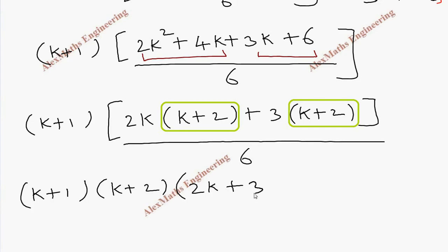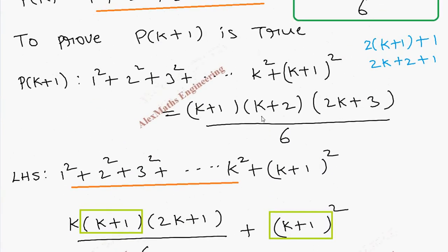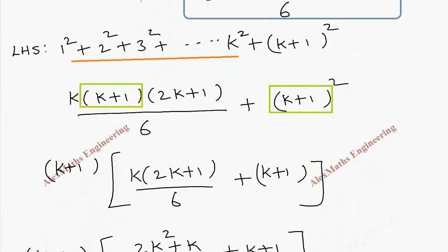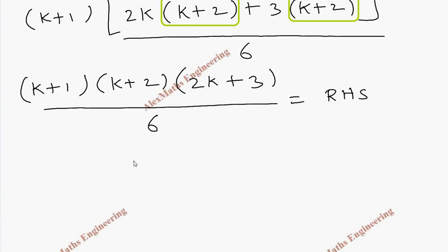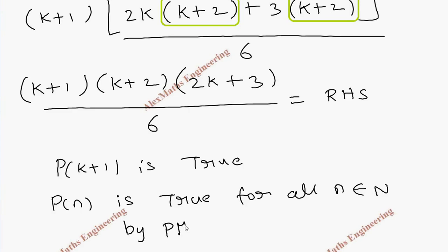Therefore the LHS simplifies to (k+1)(k+2)(2k+3) divided by 6, which matches exactly the RHS we derived for P(k+1). Since LHS equals RHS, P(k+1) is true. Hence by the principle of mathematical induction, P(n) is true for all n belonging to the natural numbers, that is, for all positive integers.